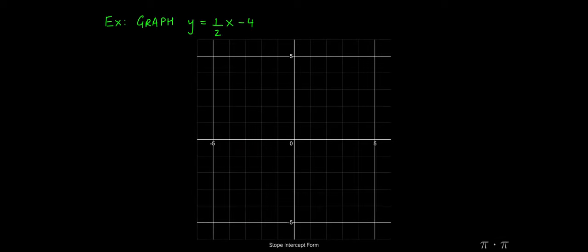Let's say we're asked to graph the equation y equals one half x minus 4. It'd probably be a good idea to recognize that this equation is already in slope-intercept form, so we can definitely use that information to our advantage.